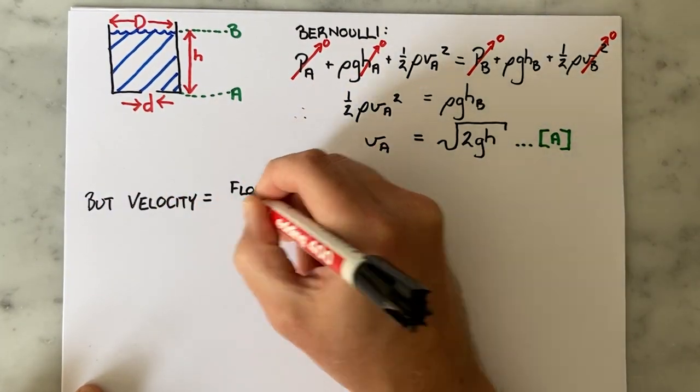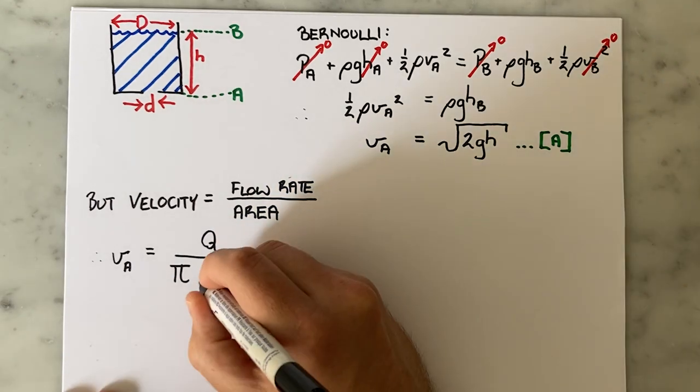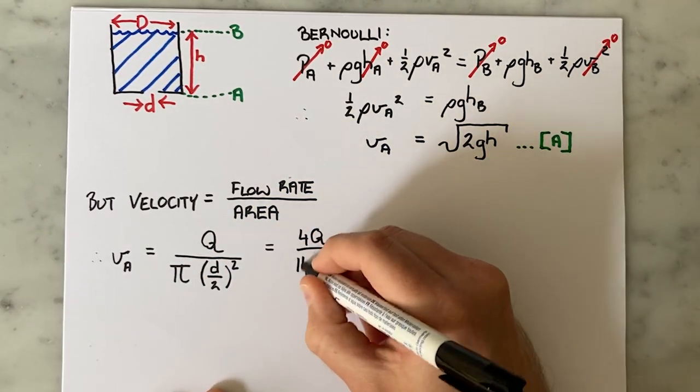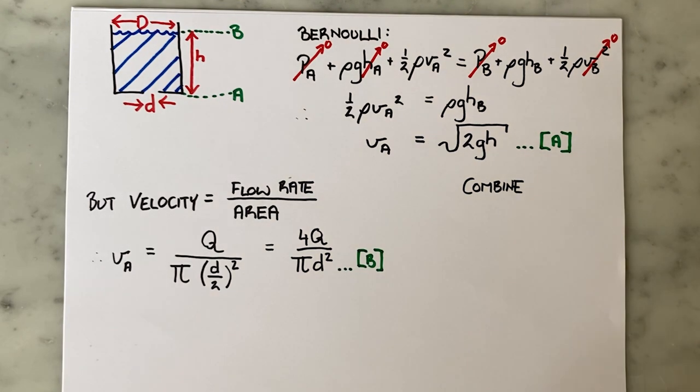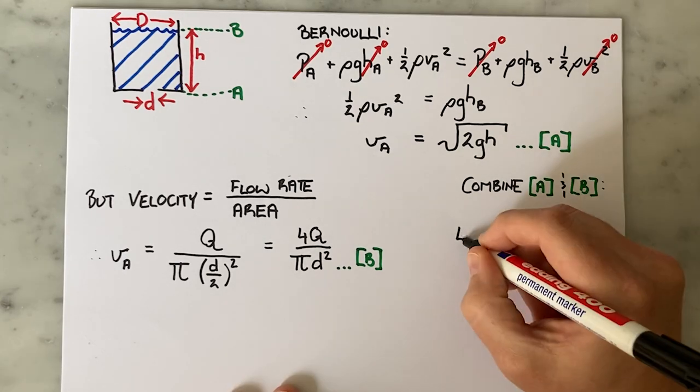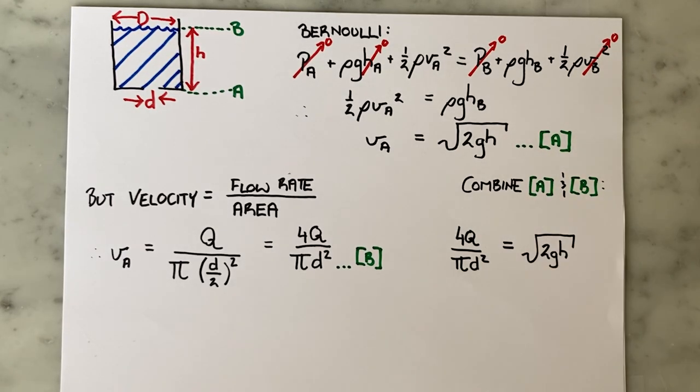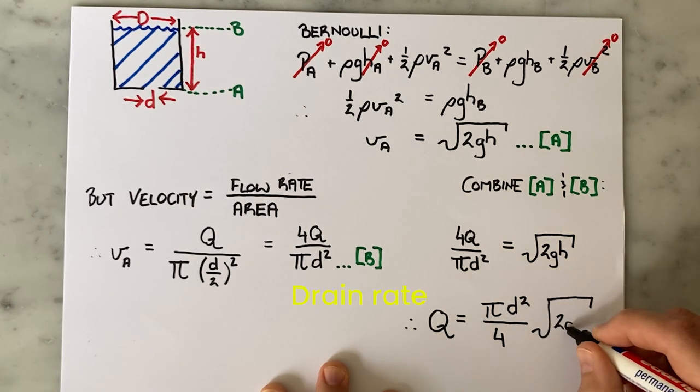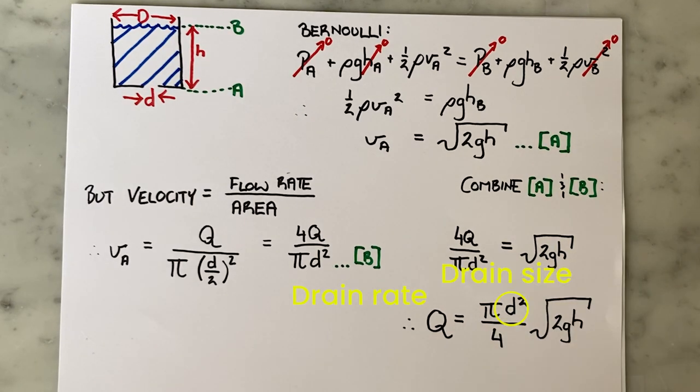The velocity through the drain hole can be expressed in terms of the flow rate if we divide it by the area of the drain. And so we arrange everything and get a nice expression for the flow rate through the drain as a function of two things: the size of the drain and the level of liquid in the tank. Increasing either of these increases the flow rate through the drain, and your intuition should tell you as much. The way you get more liquid through the drain is with a bigger drain or with more water in the tank.